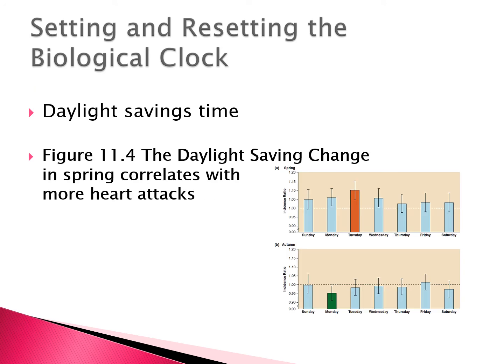Daylight saving time — springing forward — creates the same kind of phase advance as traveling east, and this correlates with more heart attacks. On the Tuesday after we spring forward and return to work on Monday, there are significantly more heart attacks than on other days. When we fall back — the phase delay — we do a little better on that Monday morning.